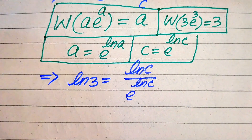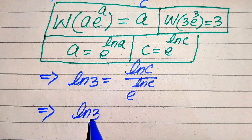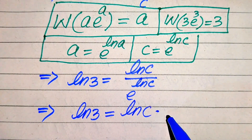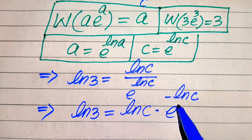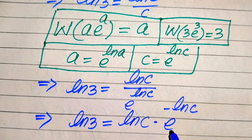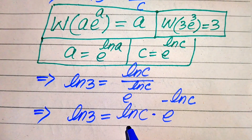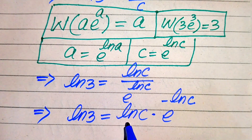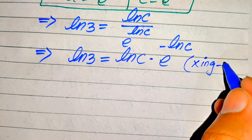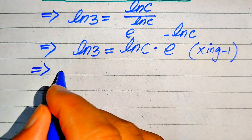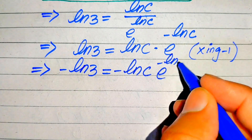In the next step we move the exponential term to the top. When we move it up, the positive exponent becomes a negative exponent, so we write: log of 3 equals log of c multiplied by e to the power of minus log c. To match the form required for the Lambert W function, the exponent of e must match the multiplying term. Since we have log c but need minus log c, we multiply both sides by minus 1, giving: minus log 3 equals minus log c times e to the power of minus log c.